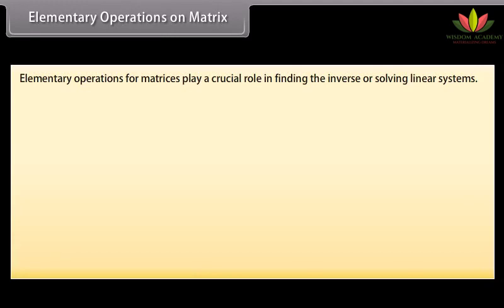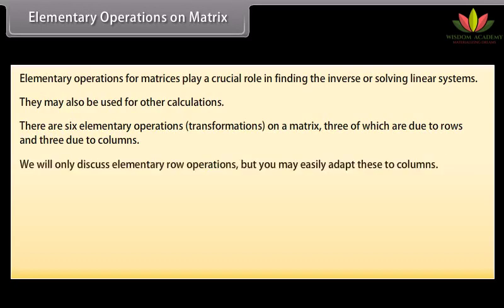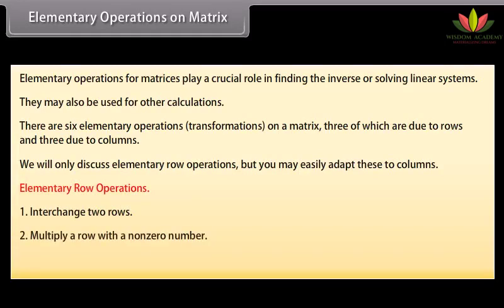Elementary operations on a matrix: Elementary operations for matrices play a crucial role in finding the inverse or solving linear systems. They may also be used for other calculations. There are six elementary operations or transformations on a matrix — three due to rows and three due to columns. Elementary row operations: interchange two rows, multiply a row with a non-zero number, add a row to another one multiplied by a number.